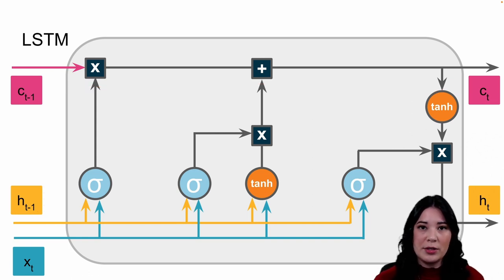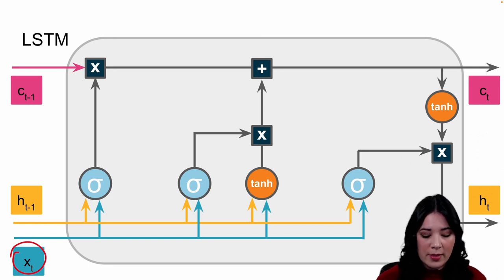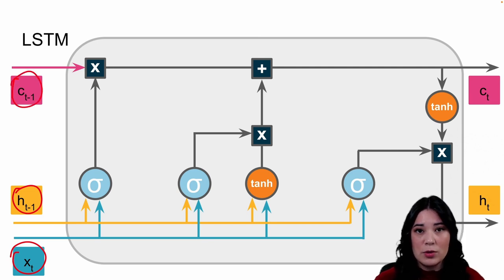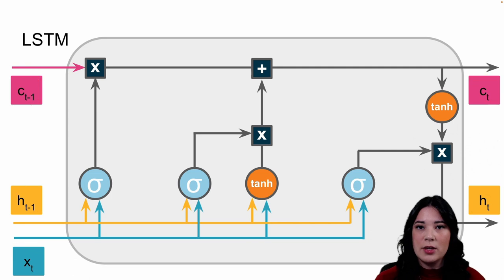The LSTM cell looks complicated, but we'll go through each part. Just like simple recurrent architectures, we have a couple of inputs. First, we have our actual input — a word, a stock price, or anything else recorded in a series. Then we have our previous hidden state from the previous cell, and similarly the previous cell state. We take these three things and combine them to get a new current cell state as well as a current hidden state. So the inputs and outputs are similar to a simple recurrent network, with the addition of this long-term cell state.